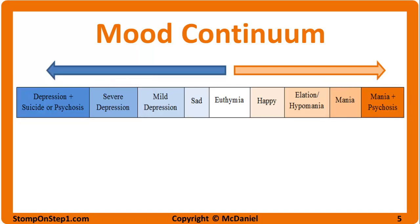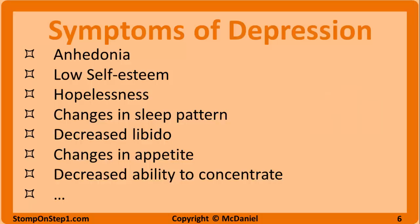As we move forward we will plot each mood disorder on this same picture. Depression can involve a loss of interest in previously pleasurable activities — a.k.a. anhedonia — low self-esteem, hopelessness, and fatigue. Depressed individuals may sleep way more or way less than normal, have decreased libido, eat way more or way less than normal, or have a decreased ability to concentrate. Moderate to severe cases can cause a loss of function, and in severe cases depression can lead to suicidal ideation or psychosis. Psychosis involves things like delusions and hallucinations, but we will save that topic for the next video in the series.